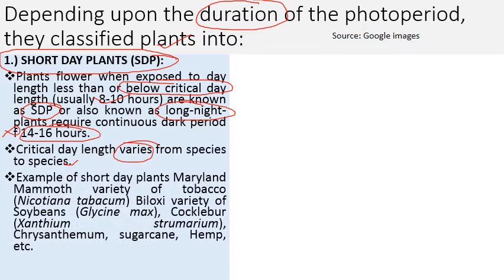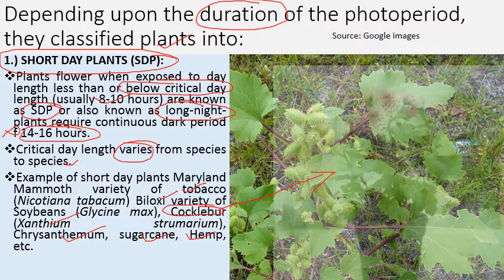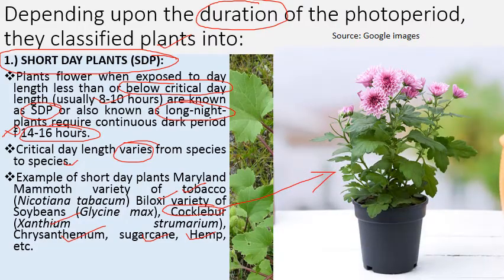Examples of short day plants include the Maryland Mammoth variety of tobacco, the Biloxi variety of soybean, and the most famous example: Xanthium strumarium, commonly known as cocklebur. Other examples are chrysanthemum, sugarcane, and hemp plants.